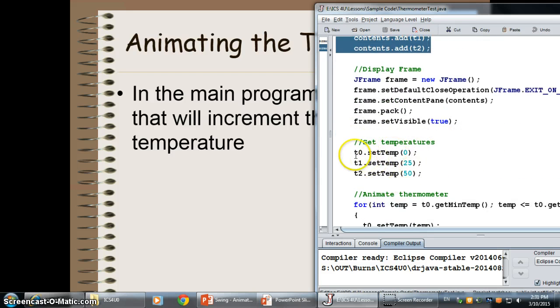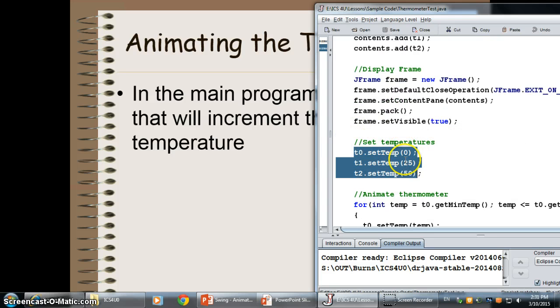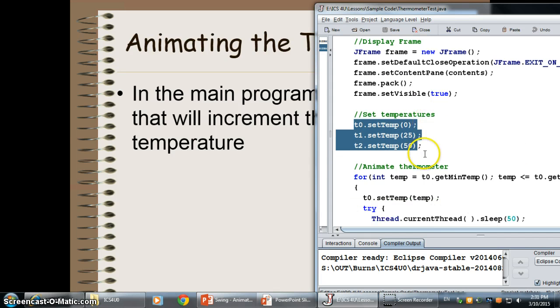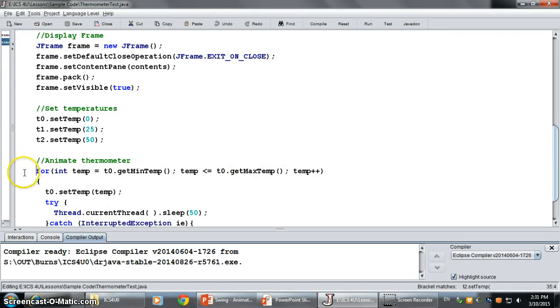Now, I can start to do things with them. I can set the temperatures of each one. So, 0, 25, and 50. And then here's where I do my animation. I'm going to set my loop here. Starting at thermometer zero, I'm going to start at 0, its minimum temperature. It's going to keep increasing its temperature until we get to the maximum that thermometer zero can have, increasing by one degree. And all I'm going to do is set the temperature of thermometer zero to 1, and then to 2, and then to 3.